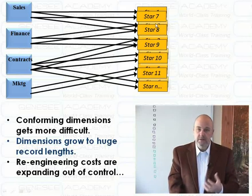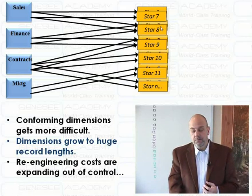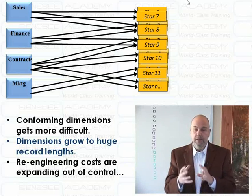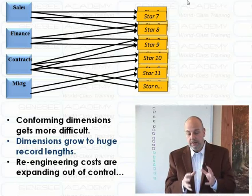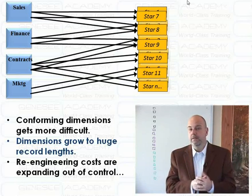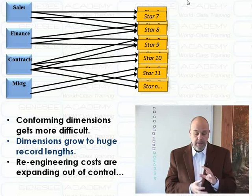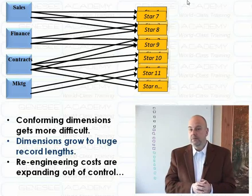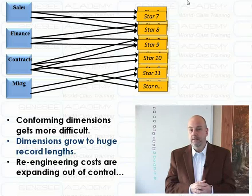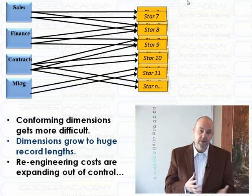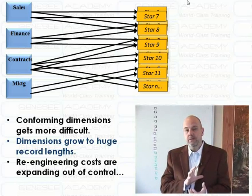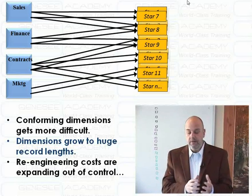We've done some things to deal with this, things like creating conformed dimensions, then reading from mart layer to mart layer, within a conformed, federated fashion. But it gets more and more difficult now as we add more context data to the same dimensions to maintain those dimensions. They grow out of control. They're huge record lengths. They're hard to manage. They have to be reengineered. And we also have, just in general, maintaining this and the reengineering costs kind of spiral out of control.